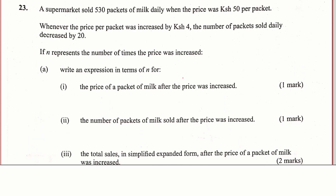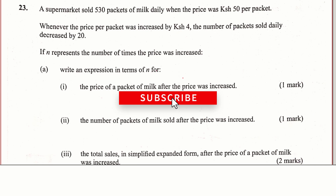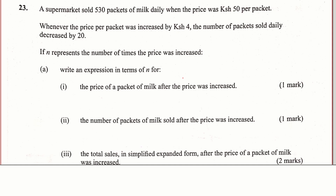Let's go to the first part: write an expression in terms of n for the price of a packet of milk after the price was increased. We are already given the number of packets sold daily when the price was 50. Then whenever the price of a packet was increased by 4 shillings, the number of packets sold decreases by 20. And n represents the number of times the price was increased.